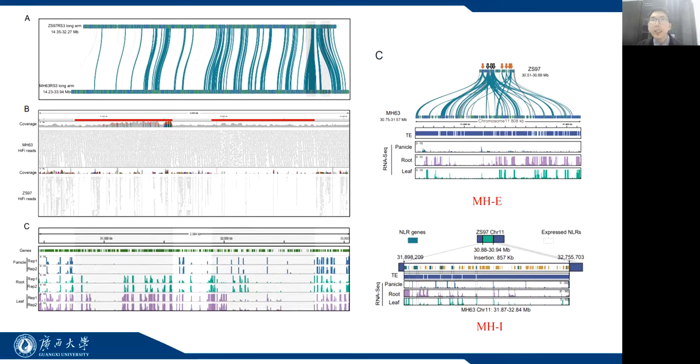In the MHE region, most NLR genes in Zhenshan were amplified 2 to 10 fold in Minghui, and these genes were more likely to be expressed in roots than in other tissues.